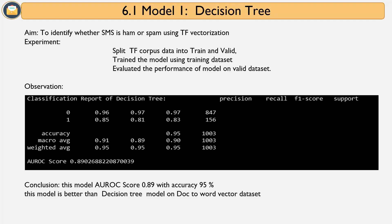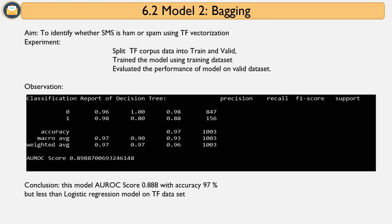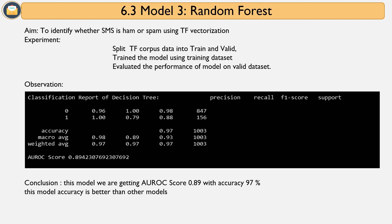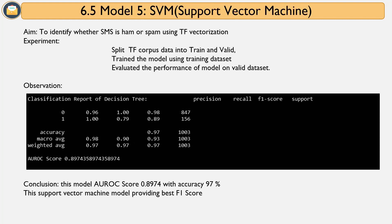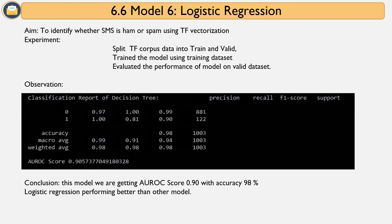The bagging model on TF achieved 97% accuracy and AU-ROC of 0.8988. Random forest on TF achieved accuracy of 0.97 and AU-ROC of 0.8942. AdaBoost achieved accuracy of 0.96 and AU-ROC of 0.8979. Support vector machine achieved accuracy of 0.97 and AU-ROC of 0.897. Logistic regression achieved the highest accuracy of 0.98 and AU-ROC of 0.9057.